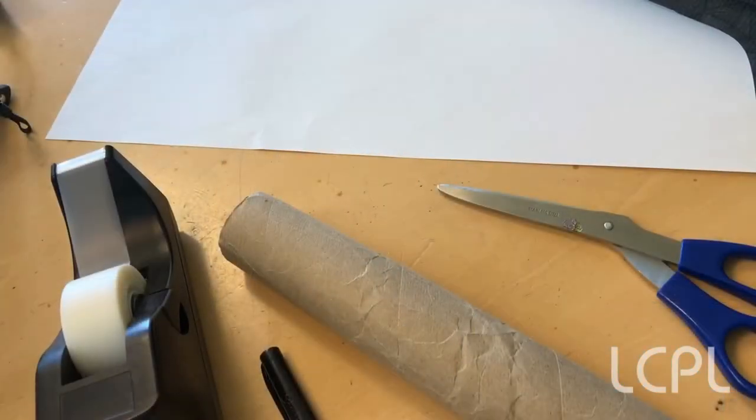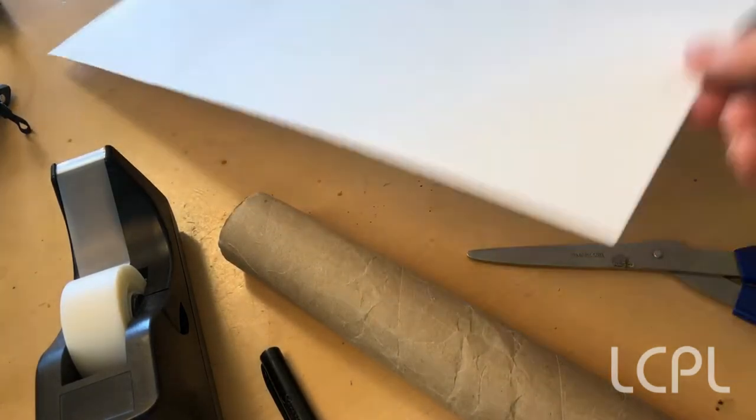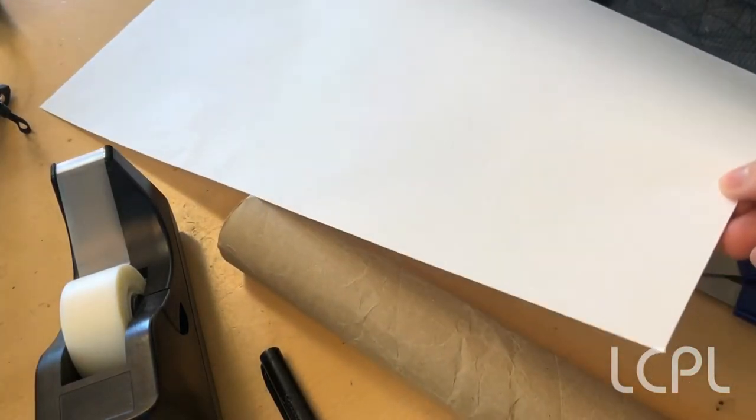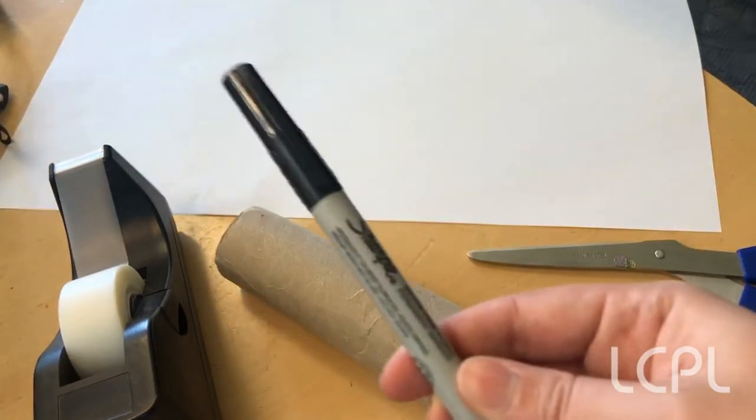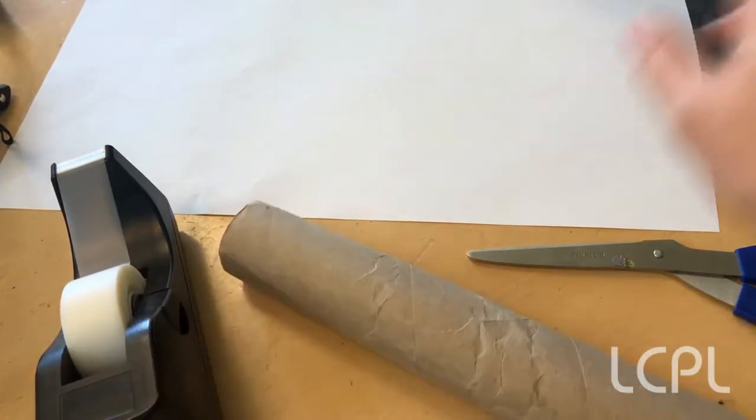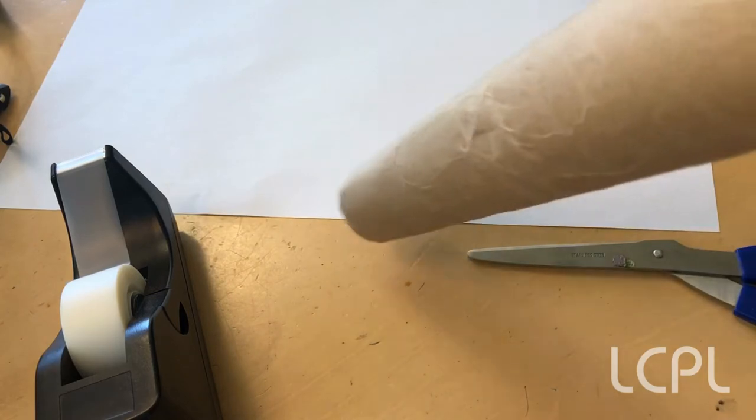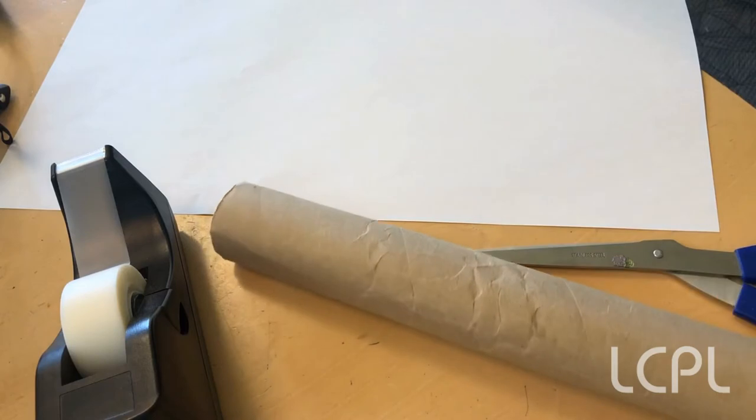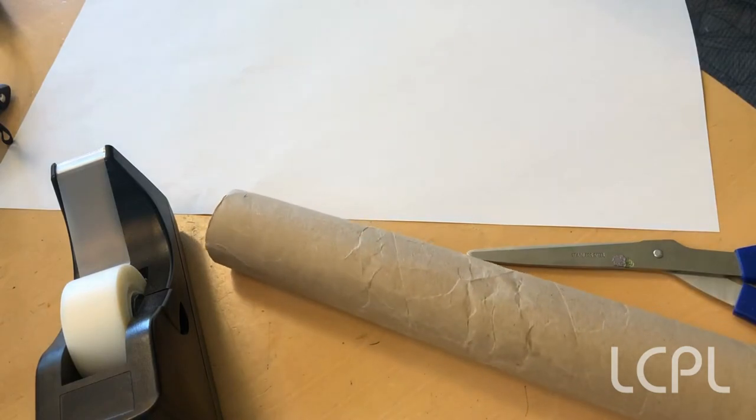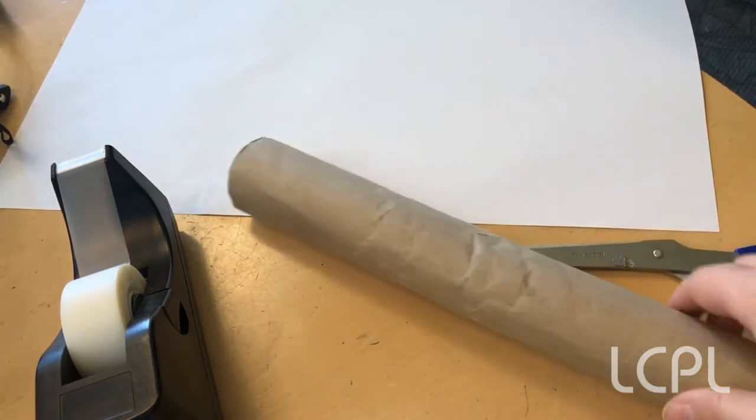For this craft, the things you will need are a pair of scissors, a long piece of paper—I went for an 11 by 17 inch paper—a pen, some tape, and something long and cylindrical, like a toilet paper roll or a paper towel roll. You can also use a cup or something else that's long and cylindrical, but I have a paper towel roll, so that's what I'll be using.